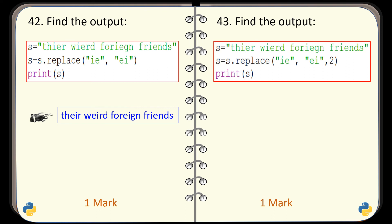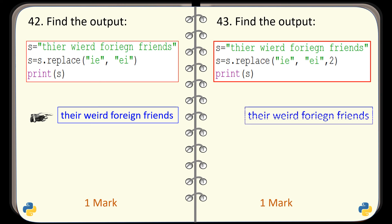Question number 43. Again, find the output of the given code. Now the method replace has an extra parameter — the third parameter. And the output is this one.